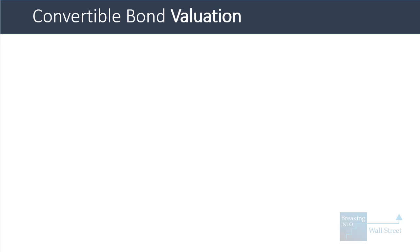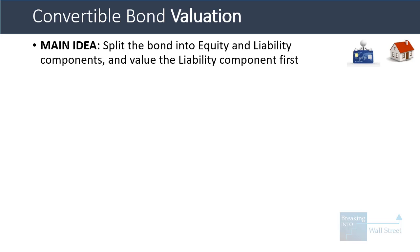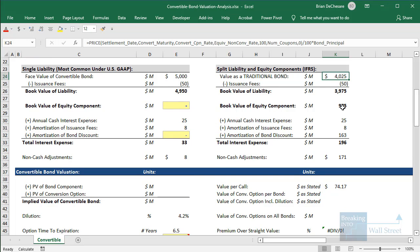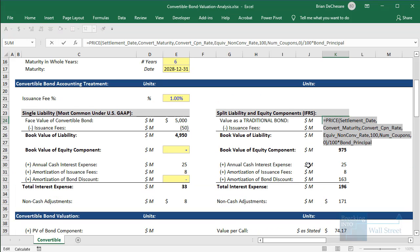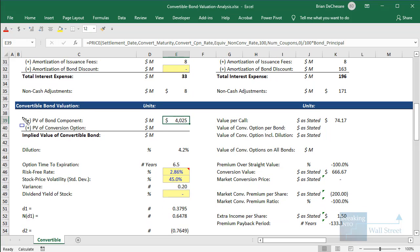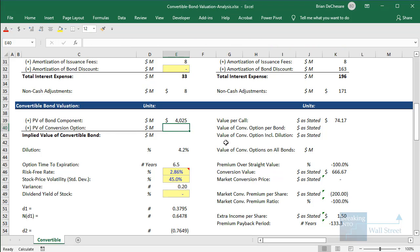Let's now talk about convertible bond valuation. The main idea is that you split the bond into equity and liability components and value the liability component first. You can use the PRICE function in Excel, and for the discount rate, use the same coupon rate on an equivalent non-convertible bond. We can take the same formula we had for the split liability and equity treatment and copy it down here as the present value of the bond component — that's really all we need to do for this part.